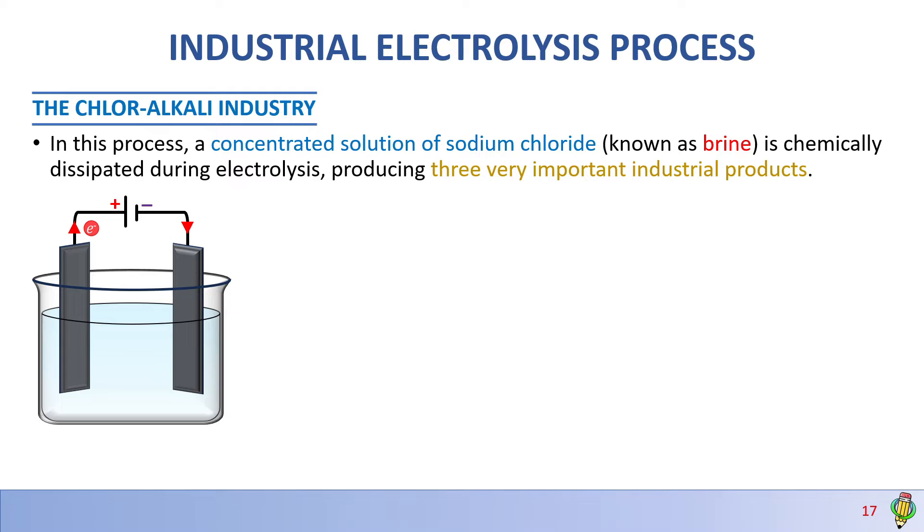The chlor-alkali industry is set up like this. In this sketch, I'll explain everything you need to know before we go to the membrane cell. We have a battery signifying this is an electrolytic cell. Electrons flow from the negative terminal towards the positive terminal. In electrolytic cells, the positive terminal is an anode where oxidation happens, and the negative terminal is a cathode where reduction happens. The electrolyte is a concentrated sodium chloride solution called brine.